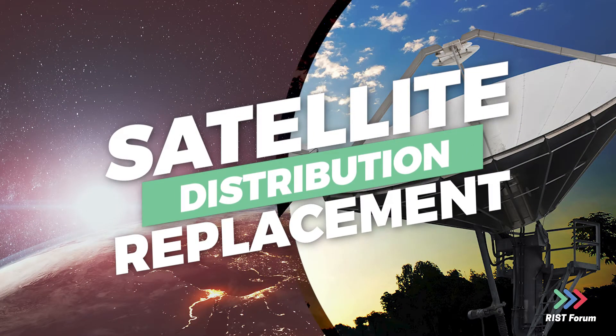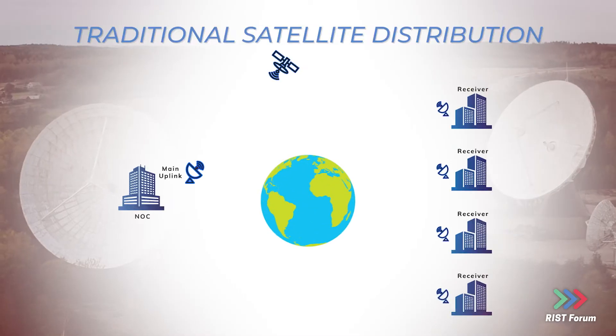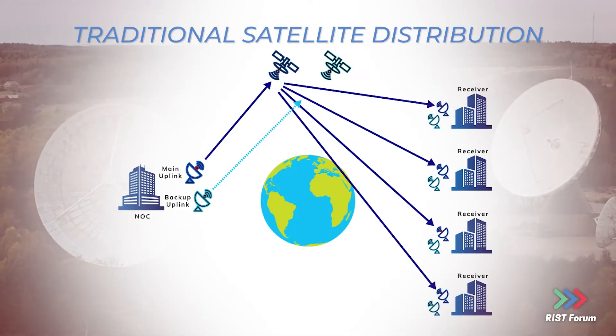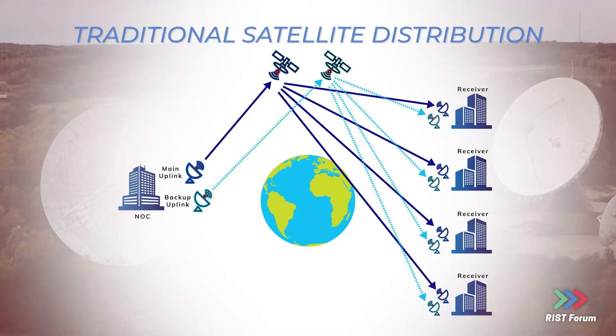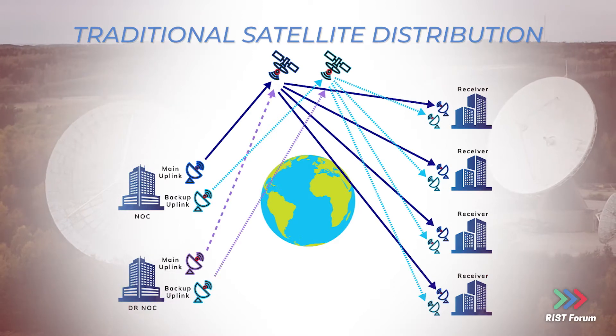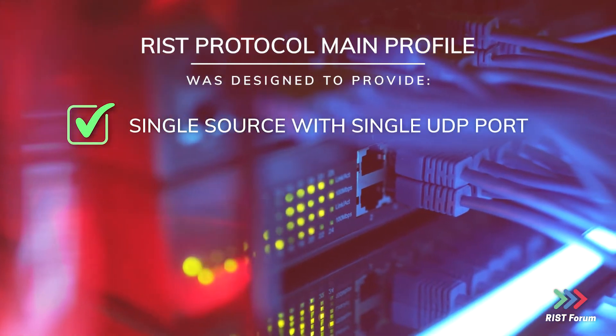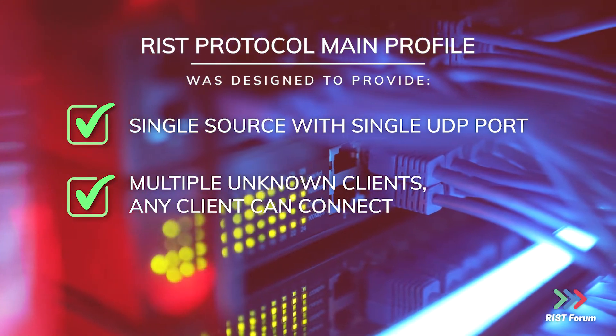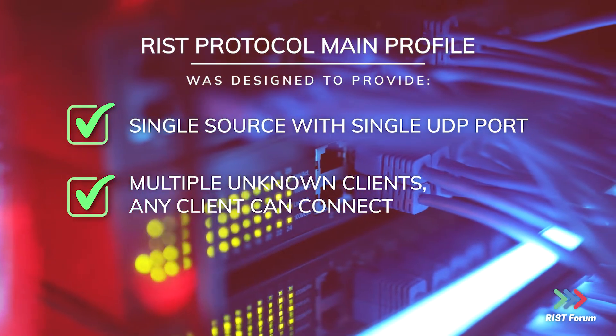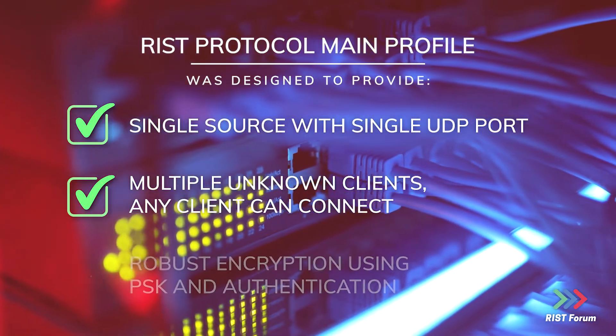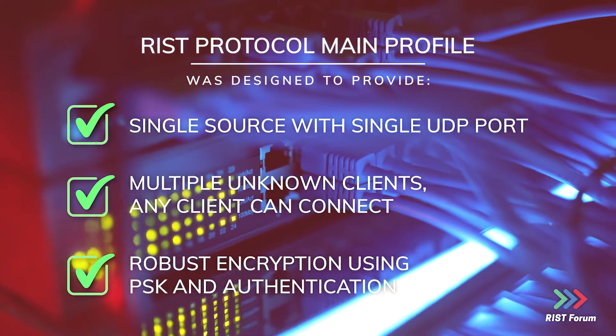Satellite distribution has long been used for contribution and distribution, and now IP is the new contender to perform the same tasks. RIS protocol main profile was designed to provide a single source with a single UDP port, supporting multiple unknown clients where any client can connect, with robust encryption using PSK.